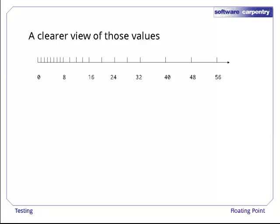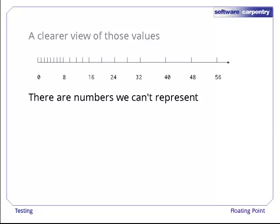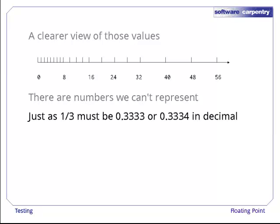Here's a clearer view of the values our scheme can represent. The first thing you should notice is that there are a lot of values we can't store. We can do 8 and 10, for example, but not 9. This is exactly like the problems hand calculators have with fractions like 1 over 3. In decimal, we have to round that to 0.3333 or 0.3334.